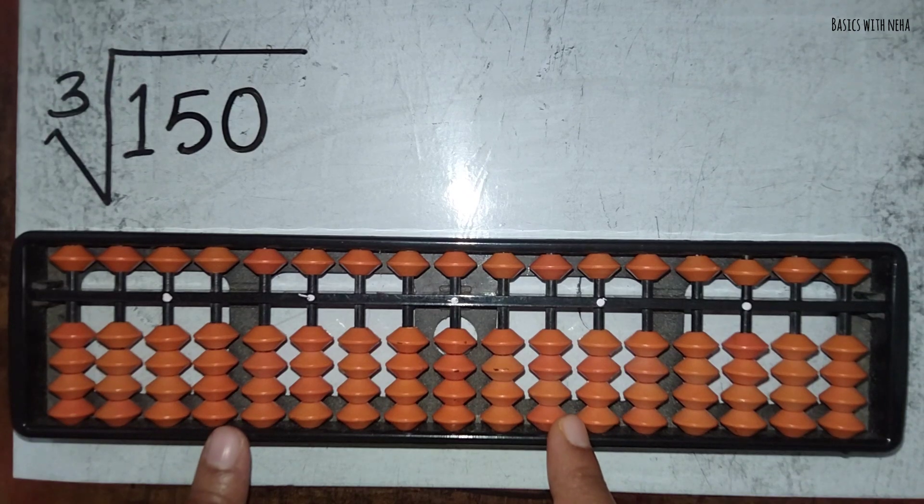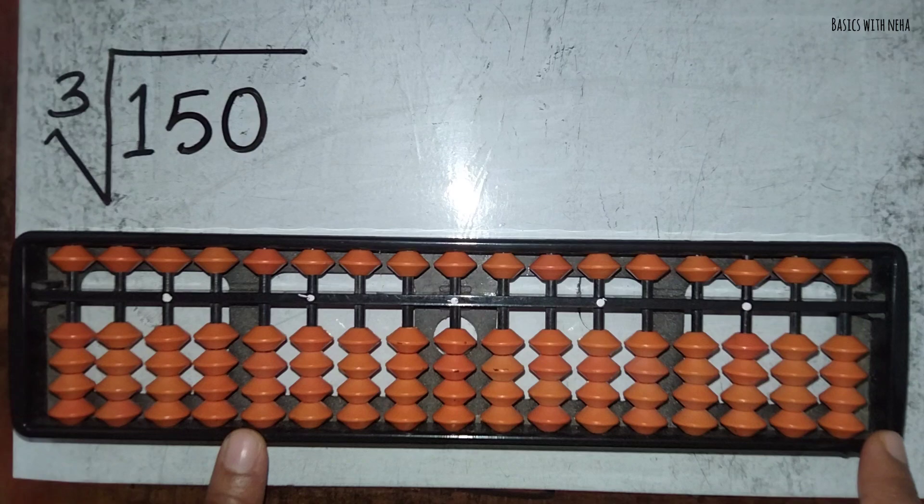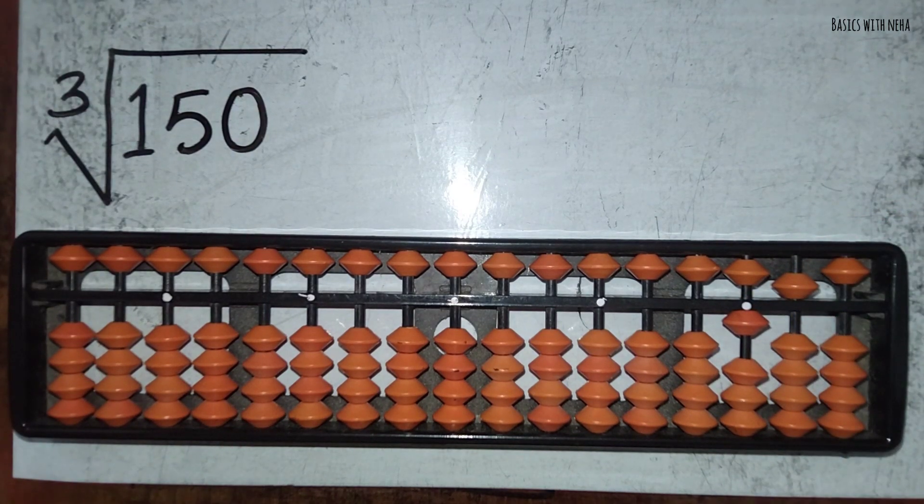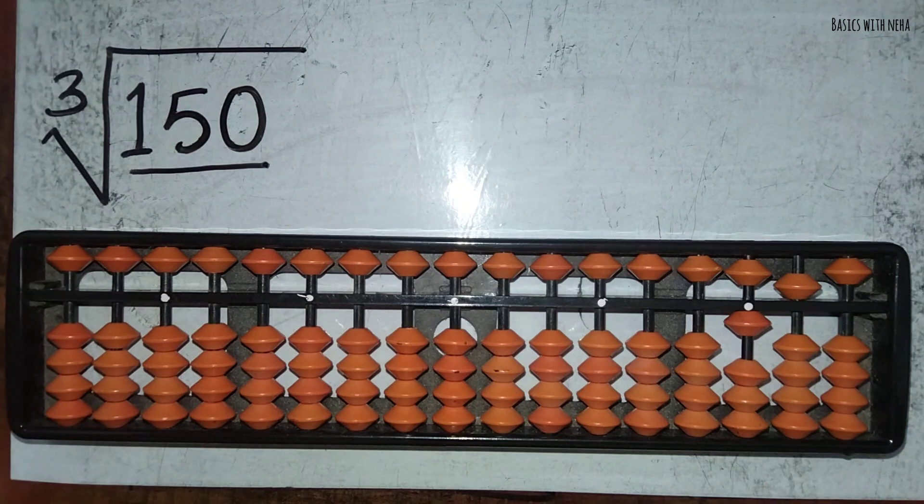Four rods being for root numbers, six rods being for square numbers, and seven rods being for cube numbers. So I'm going to place 150 in the cube part.